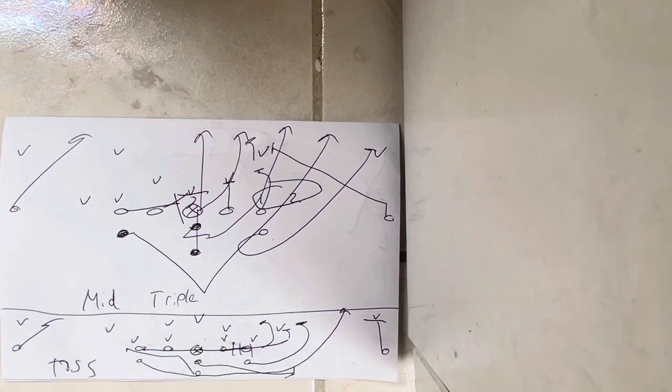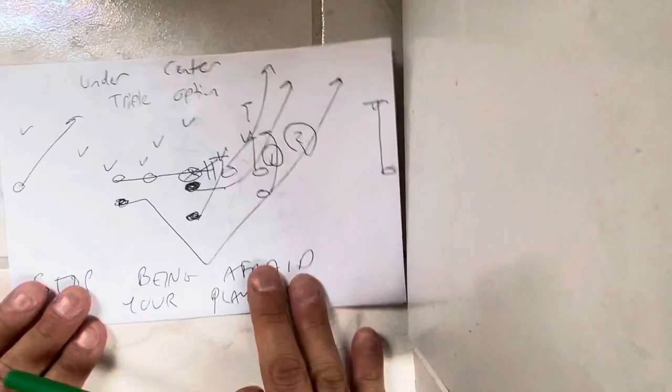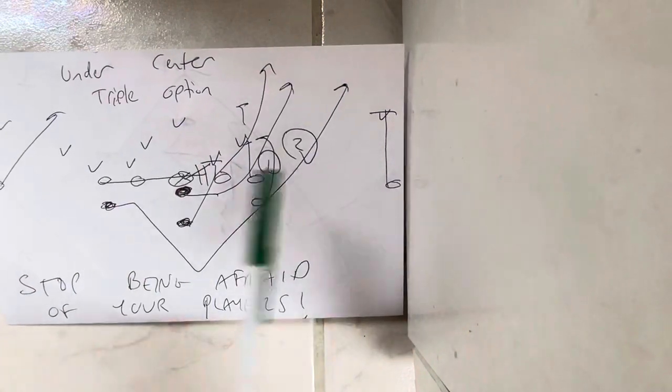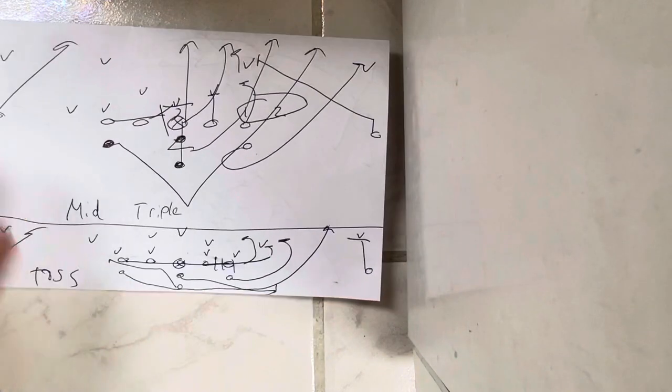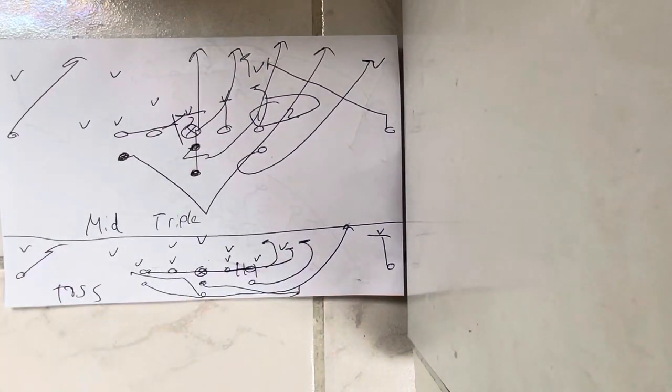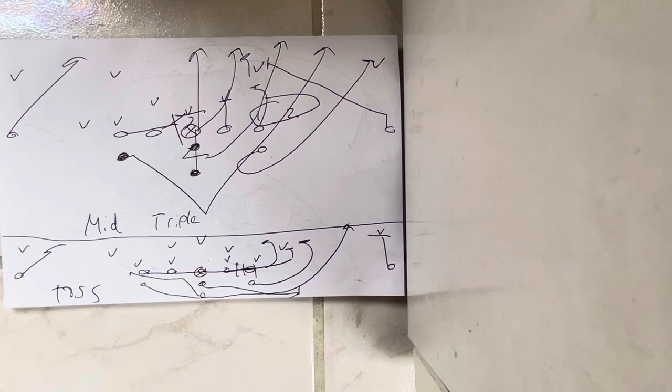Whether it's triple option or midline triple option, that's what it is. So here's a triple option, and here's midline triple option. That's the number one thing Army, Navy, and Air Force did in 2020 on the spread formation. It's not even close.